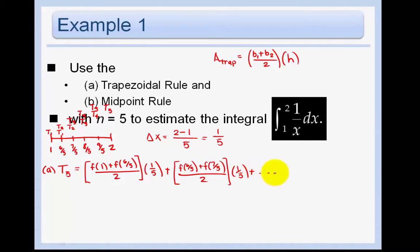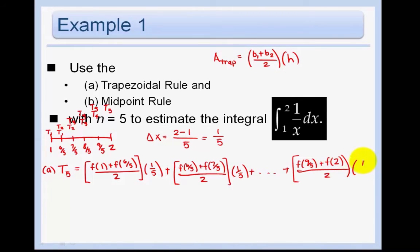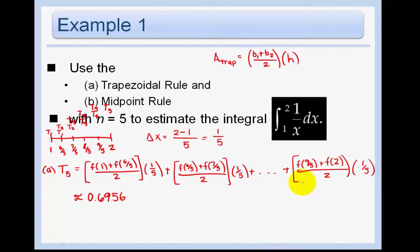Continuing the pattern: f(7/5) plus f(8/5) for the third, f(8/5) plus f(9/5) for the fourth, and f(9/5) plus f(2) for the last trapezoid. If you factor out the 1/5 and compute this in your calculator using the Y1 function, you should get approximately 0.6956. Practice this on your own and ask in class if you have any questions.